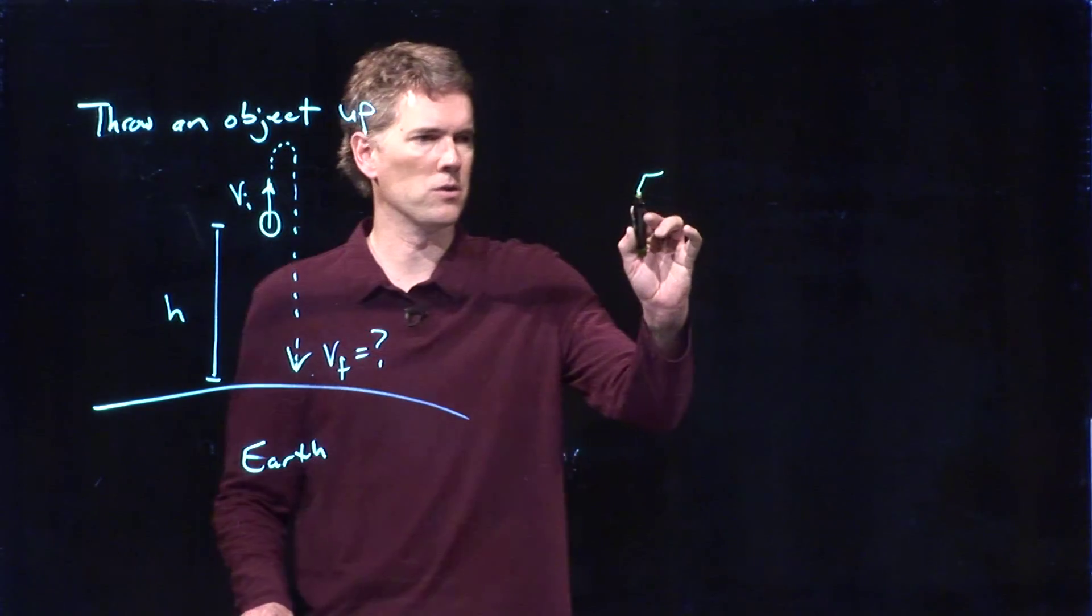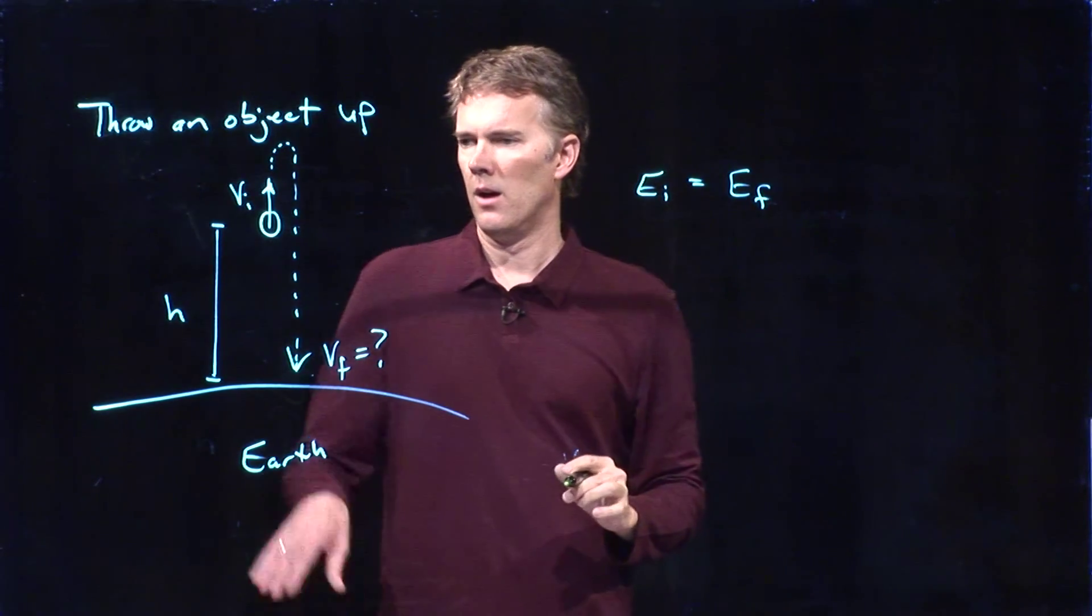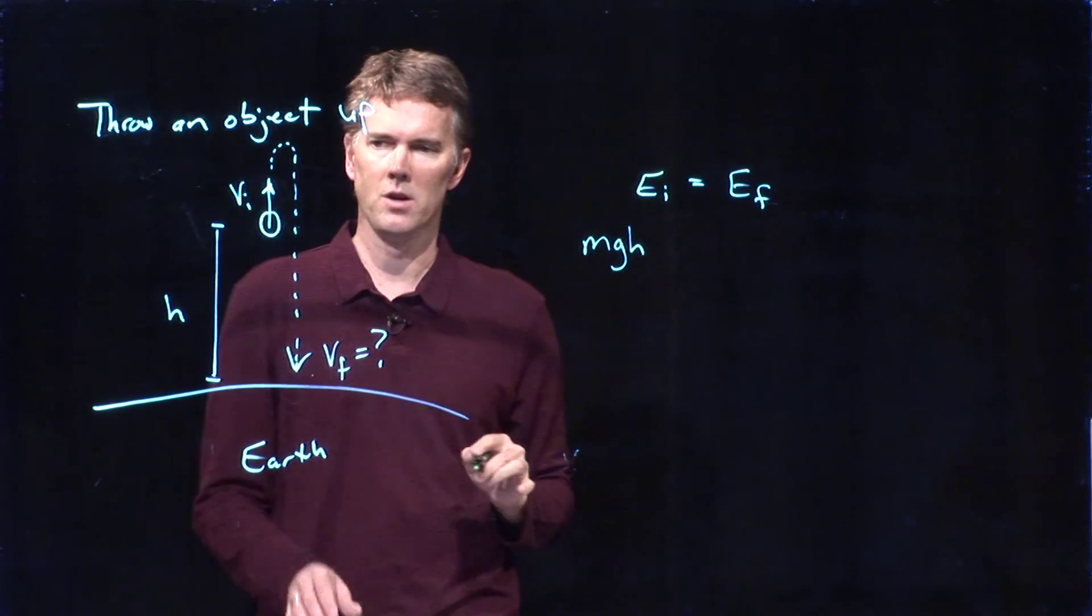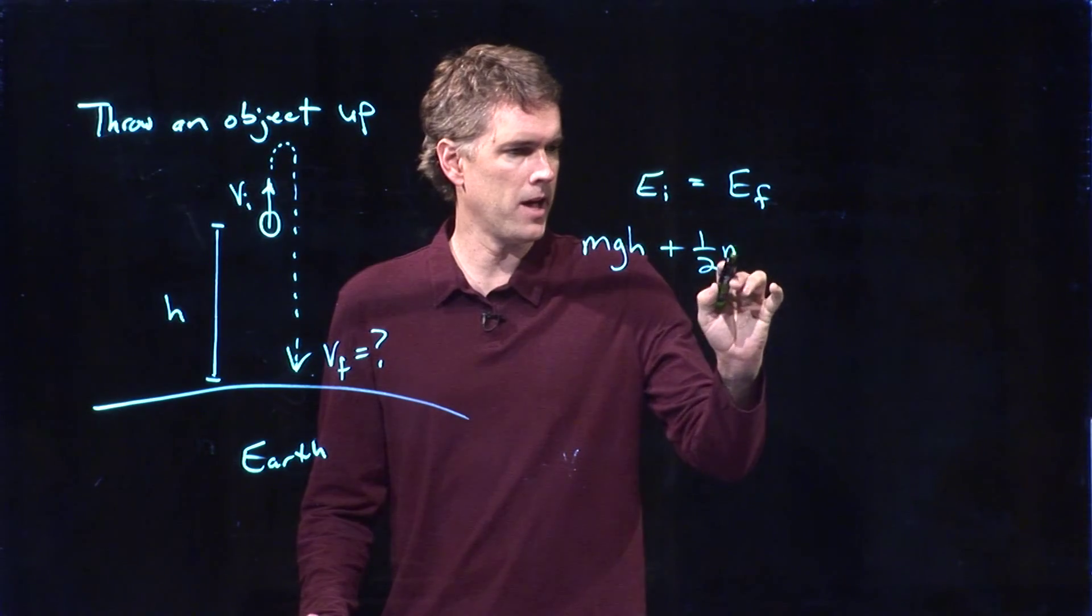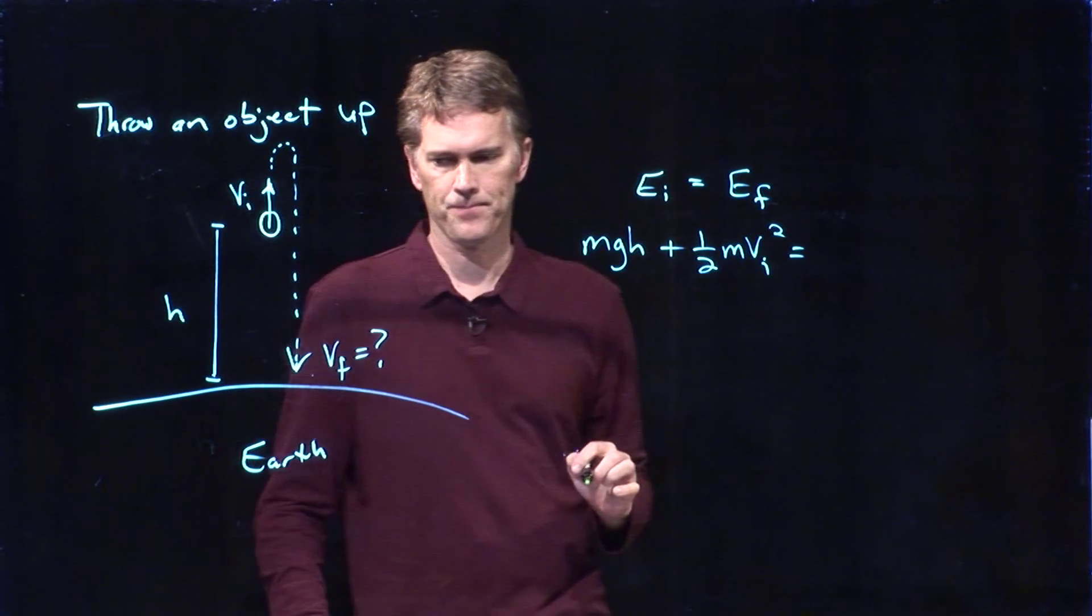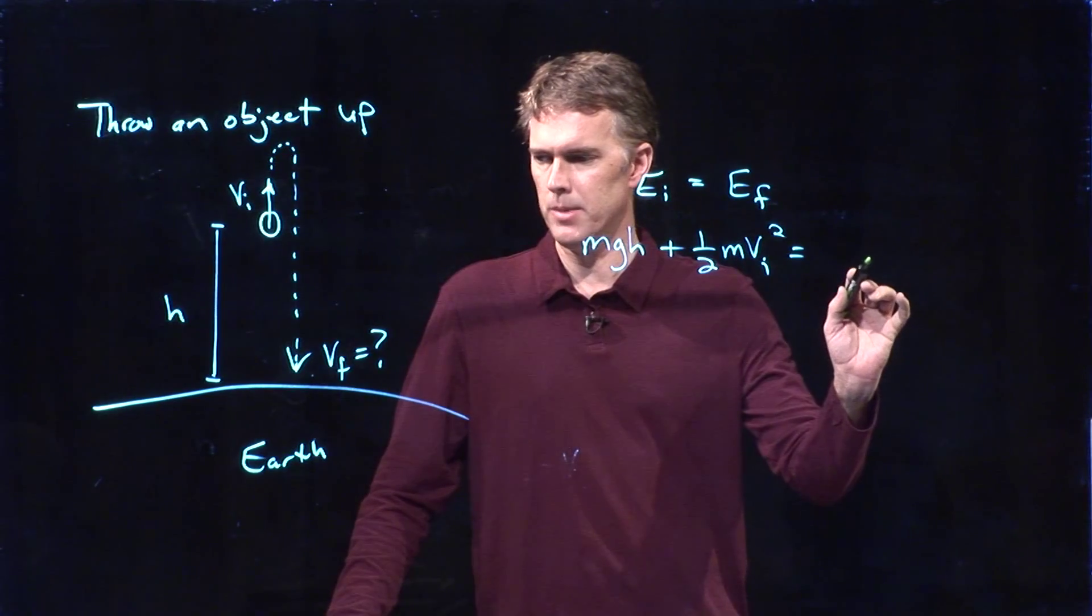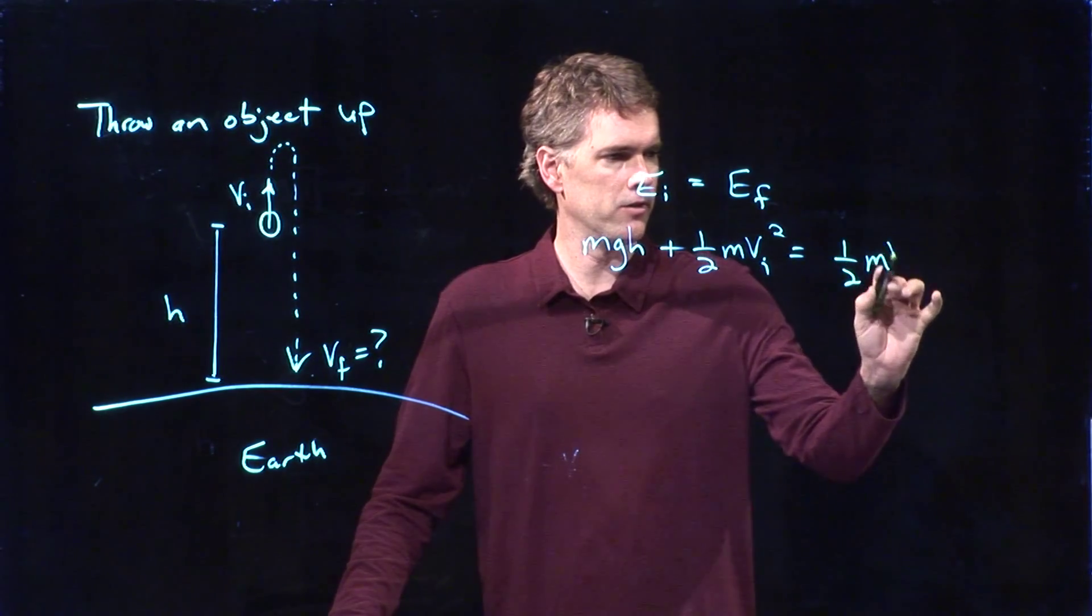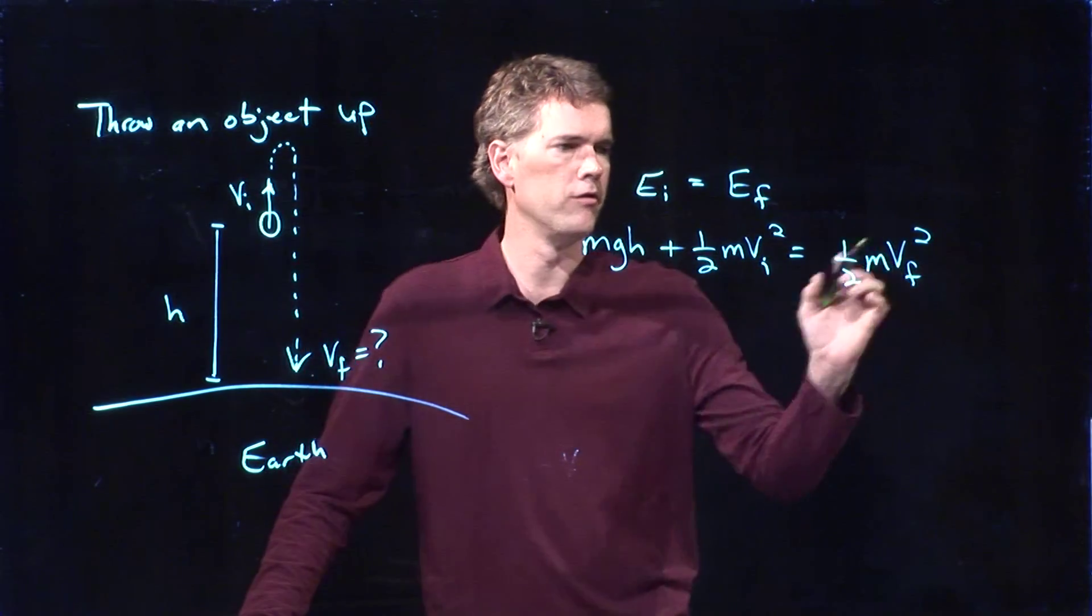Energy initial equals energy final. We're up here at a height h, so we've got potential energy of mgh. We threw it at speed vi, and so we have initial kinetic energy of 1 half m vi squared. When it comes back down, we don't have any more potential energy because we're down at the ground, but we do have kinetic energy.